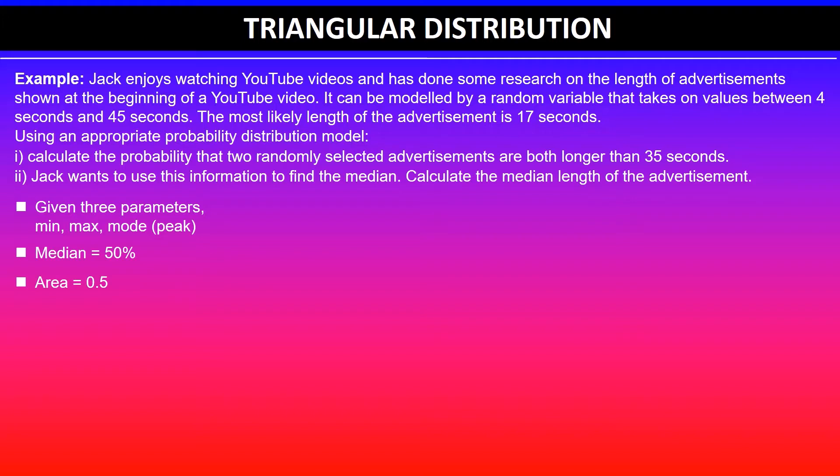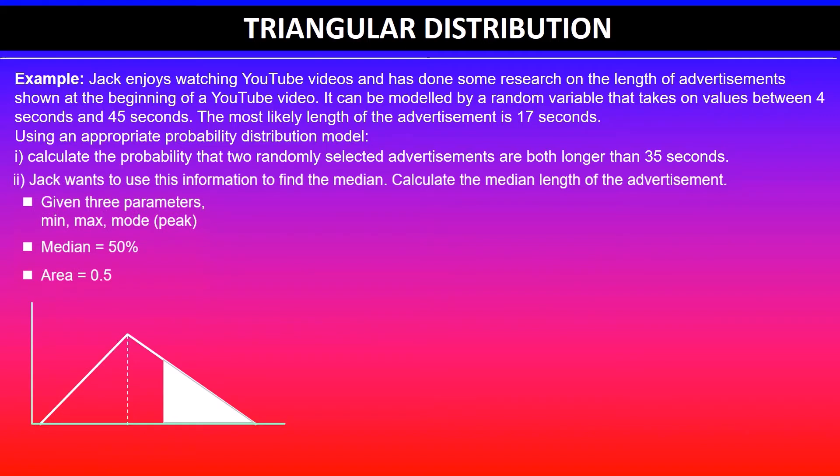We're given the probability of 0.5 and asked to find the x value. We'll quickly label the diagram with the information given. We've got a random variable x which is the length of the advertisement, then f(x) is the probability density function. The a value is 4 seconds (the minimum), the maximum value b is 45 seconds, and most likely c value is 17 seconds.